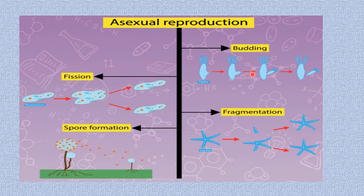You have budding taking place in Hydra, where the bud grows gradually and matures until it detaches itself from the parent. Here is a pictorial representation of fragmentation, where the starfish is cut into fragments and new organisms are formed from those fragments. Here is a pictorial representation of spore formation in mold — the spores are taken away by wind or water and, once landing on a favorable spot, grow into a new individual. In binary fission, we have paramecium — from one paramecium you get two daughter cells.